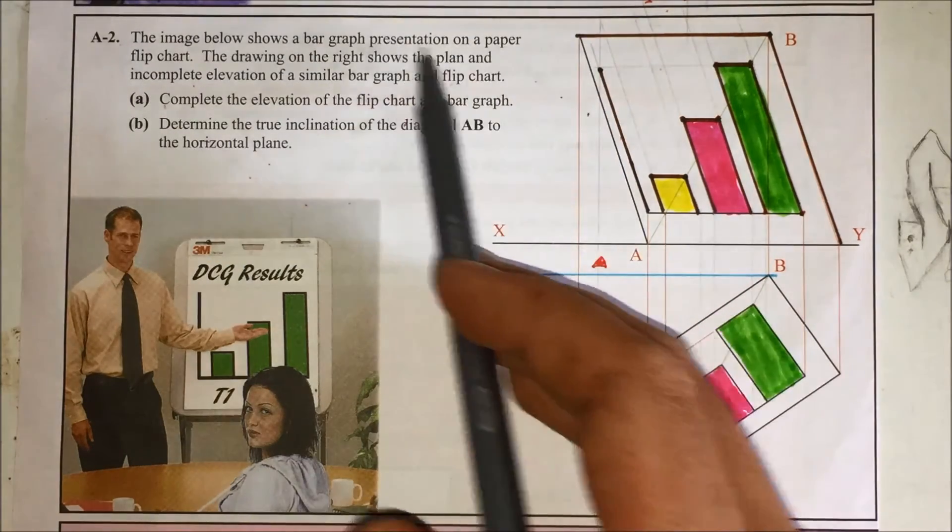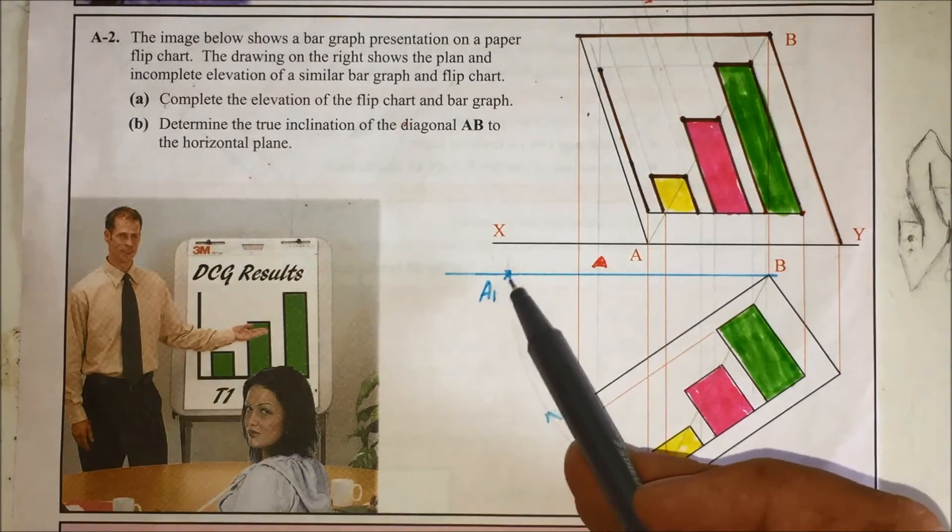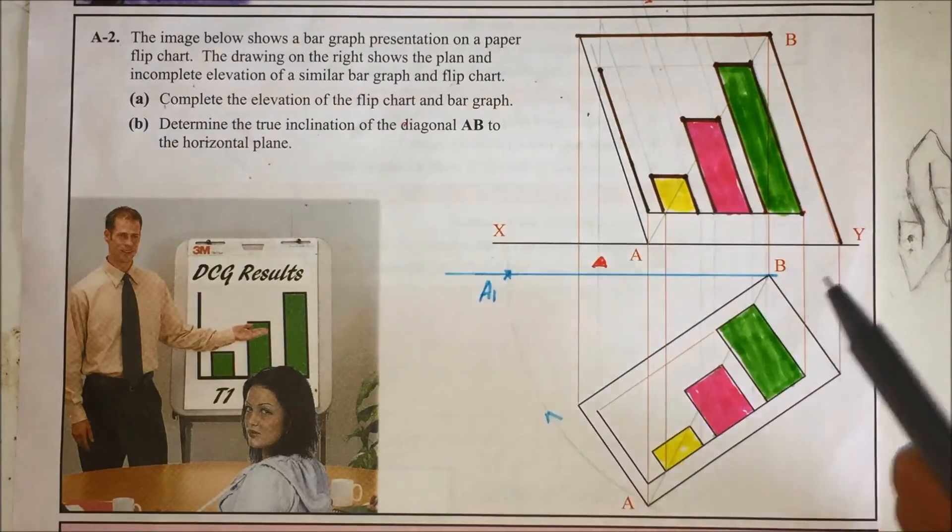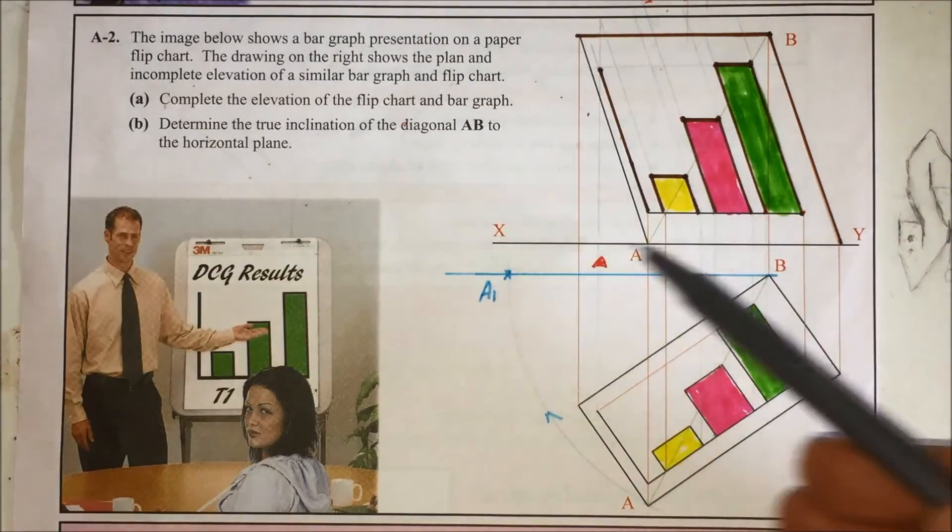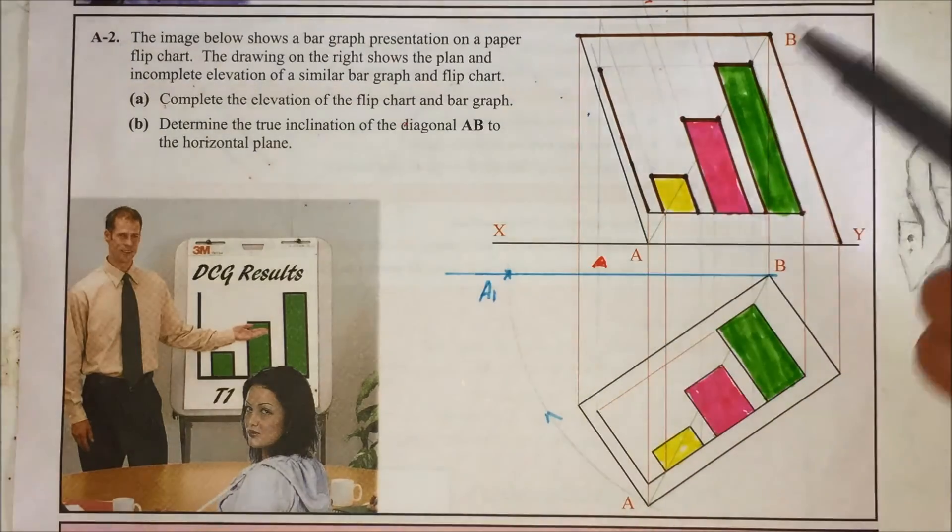You could rotate down this way, there's more room and bring B across here to the right. So if you rotate A around B, this gives you A1. And A1 would be on the horizontal plane. You're just rotating it, making it flat. It's still got the same height, it's just that it's going to be flat down here in plan.